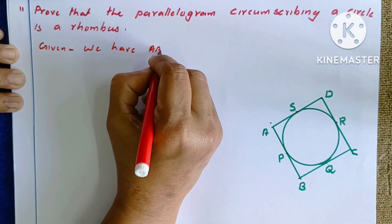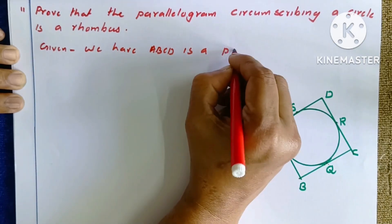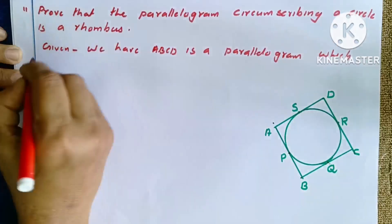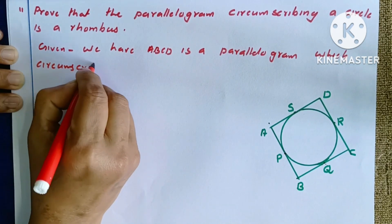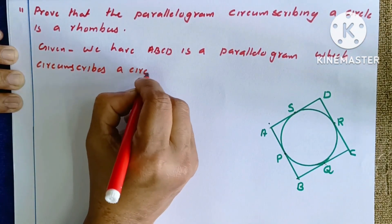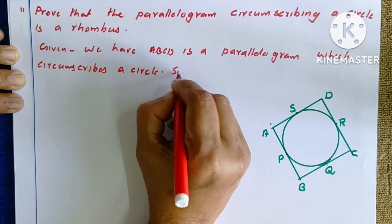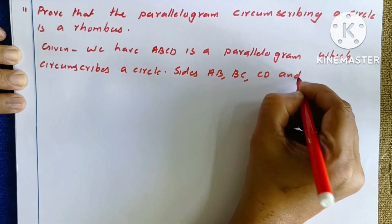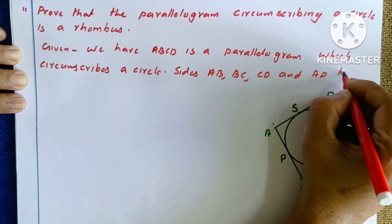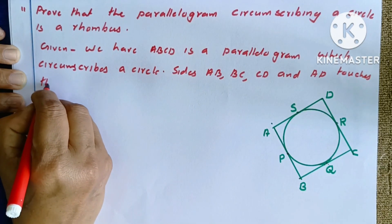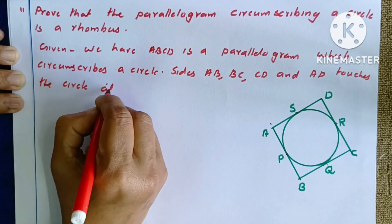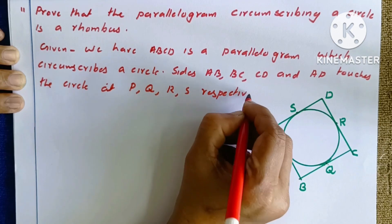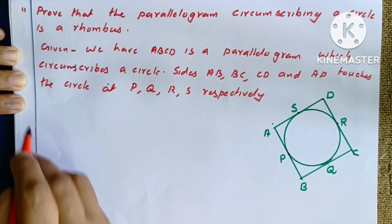ABCD is a parallelogram which circumscribes a circle. Its sides AB, BC, CD, and AD touch the circle at points P, Q, R, and S respectively.